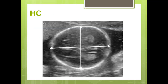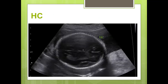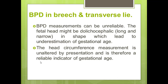Head circumference is measured from outer to outer, not from outer to inner. Regarding biparietal diameter in breech and transverse lie: in these presentations, the fetal head might be too long and narrow, so biparietal diameter is not accurate and may lead to underestimation of gestational age. It is better to use head circumference in this situation.